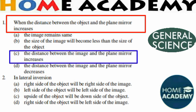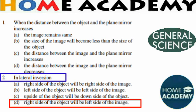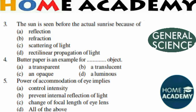Question number 2: In lateral inversion, what happens? The right side of the object will be the right side of the image, or the left side of the object will be the right side of the image? The correct answer is: the left side of the object becomes the right side of the image, and the right side of the image becomes the left side.